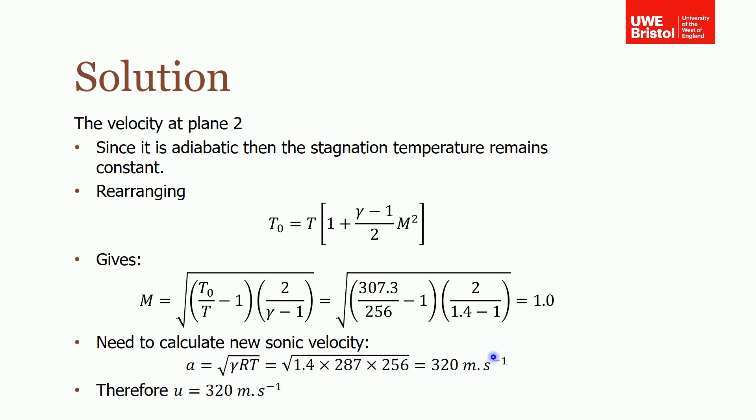This gives a sonic velocity of 320 meters per second. Therefore, because we know the flow is sonic, U equals 320 meters per second.